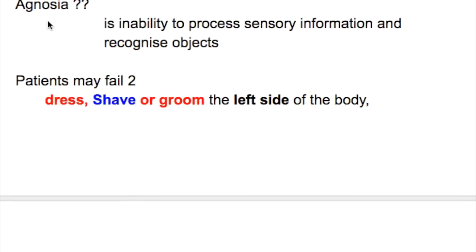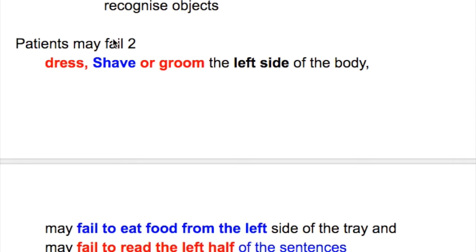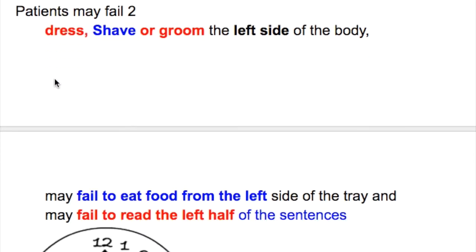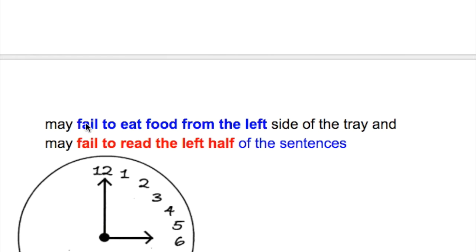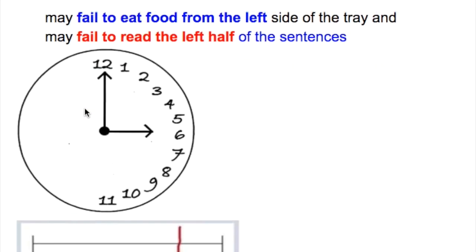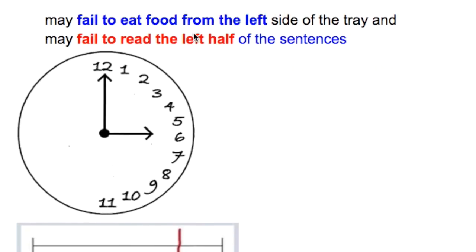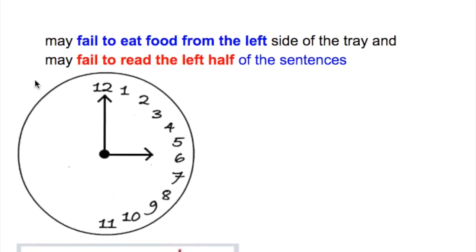What is Agnosia? Agnosia is the inability to process sensory information and recognize objects. The patient may fail to dress, shave, or groom one side of the body — especially the left side of the body, commonly. The patient may also fail to eat from the left side of the tray and may fail to read the left half of sentences.